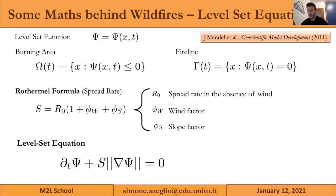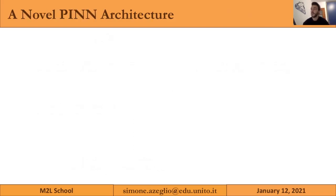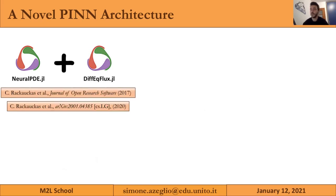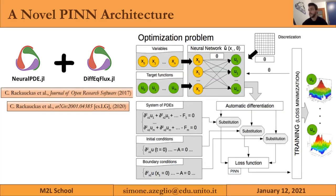The last ingredient is this PDE — the level set equation — which is what we have tackled with physics-informed neural networks. We replaced the numerical solvers from WRF with a completely different approach by employing two Julia packages: NeuralPDE and DifferentialEquations.jl. References are provided if you're curious. This gives us the particular architecture summarized in the following steps.